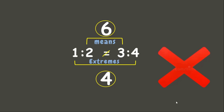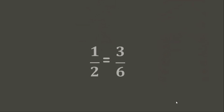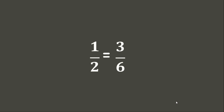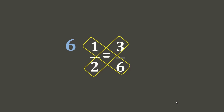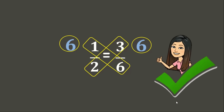Now let's find out if these fraction forms are equivalent or proportional to each other. To determine if they are proportional, let's use the cross-multiplication method. Six times one is six, while two times three is six. Since both products are six, that means they are proportional to each other.